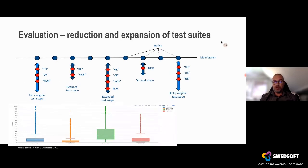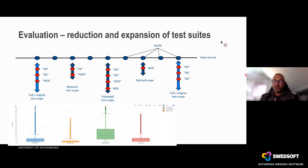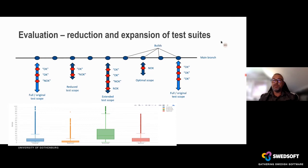By doing this, we could take the full original scope, reduce it by removing test cases that give the same results as others, and extend it with new test cases from the second contingency table — those that usually fail when other test cases pass. This gave us the optimal test case scope, reducing the test suite by a large percentage while providing test cases that should be executed together or should not be executed because we already know the verdict. The goal was to execute the full test suite once a weekend while minimizing the risk of failures.